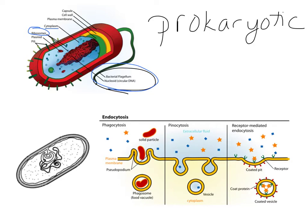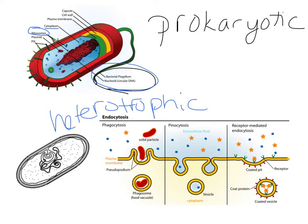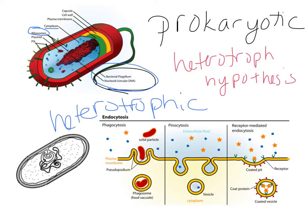It was not just any kind of prokaryote — it was a heterotroph. This is what's called the heterotroph hypothesis: the first organism was a heterotrophic prokaryote, which means it had to consume its food. Some ways it could do this: phagocytosis — cell eating, taking in large molecules; pinocytosis — cell drinking, where an invagination forms on the cell membrane and takes in whatever is there.